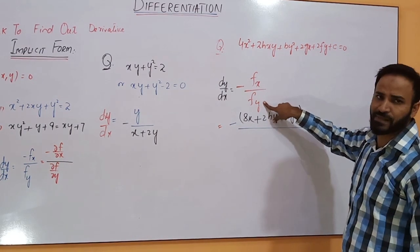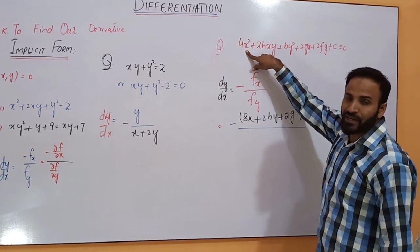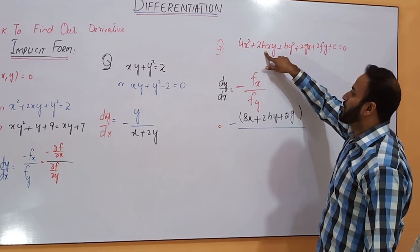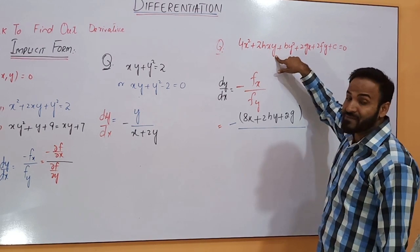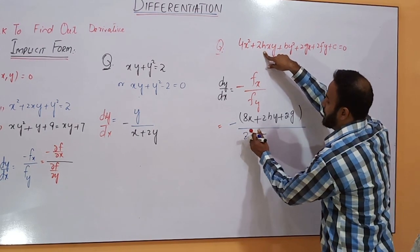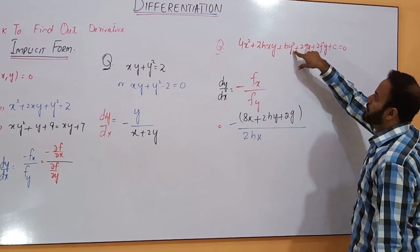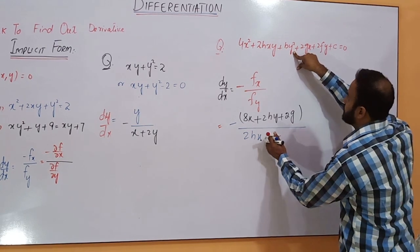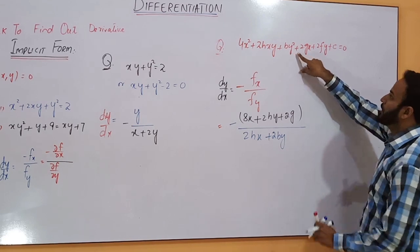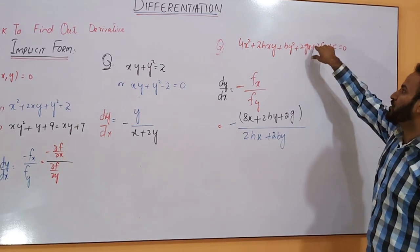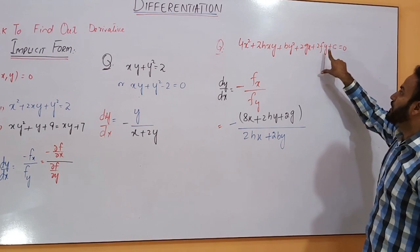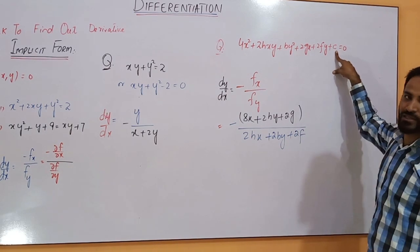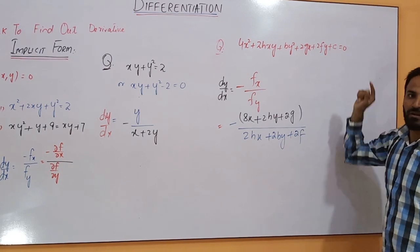Now, find the derivative with respect to y. No y term behaves like a constant, derivative will be 0. For 2hxy with respect to y, the derivative of y with respect to y is 1, so it gives 2hx. b is a constant quantity, so the derivative of y squared with respect to y will be plus 2by. No y term means it is a constant, derivative will be 0. Here there is a y term, so the derivative of 2fy will be 2f. The constant term derivative will be 0.